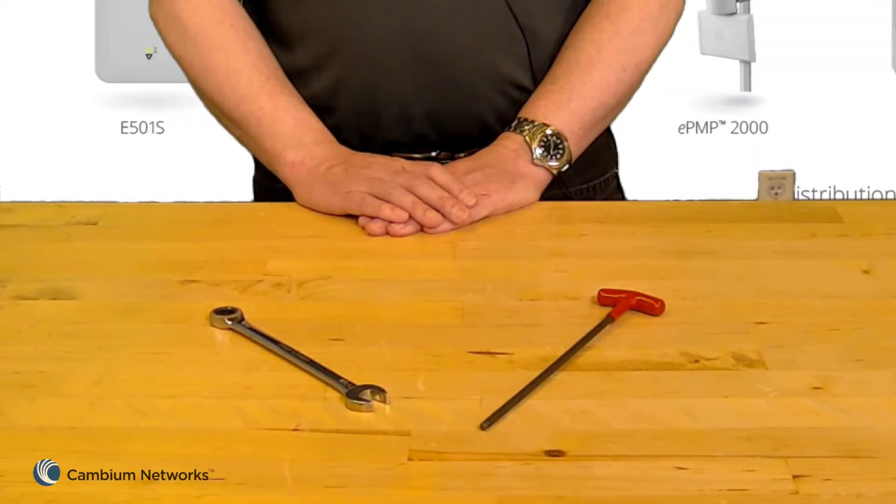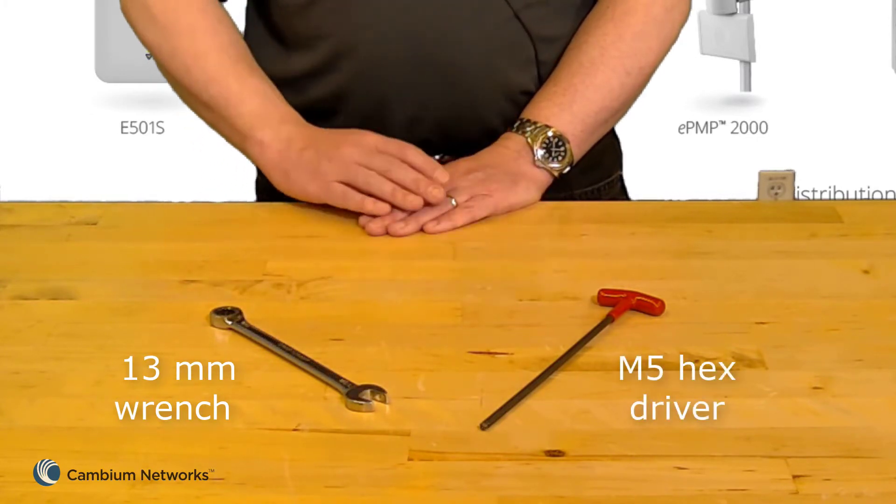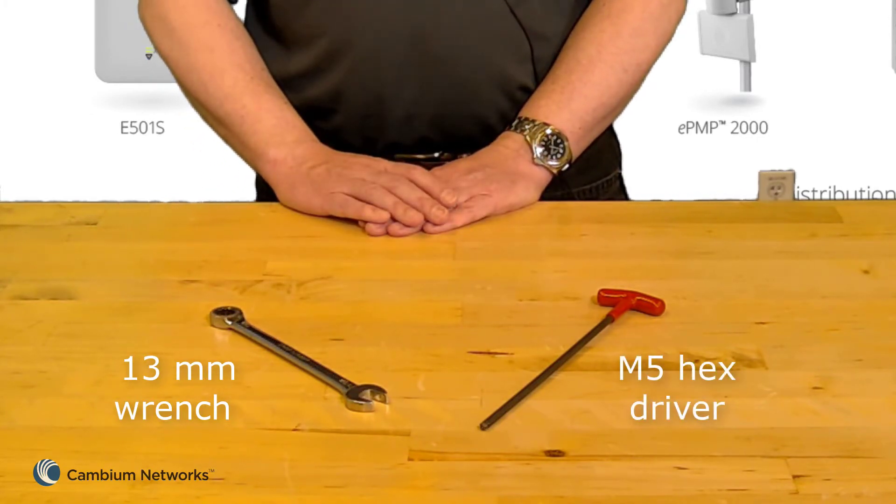Having familiarized ourselves with the components, next we'll see how to assemble the subscriber unit. Assembly requires the use of a 13 millimeter wrench and an M5 hex driver. The torque wrench is optional but recommended.